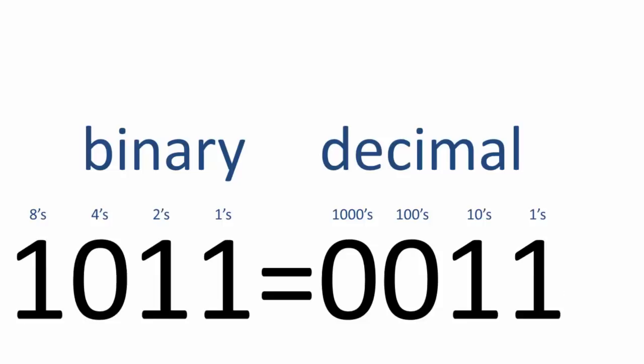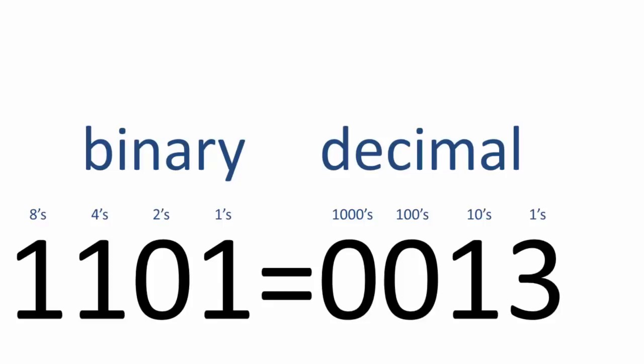Binary is not commonly used by humans, and so there are no special names to help us understand them. For example, 15 is highly recognizable in decimal, but in binary it's simply 1, 1, 1, 1. So to make things a bit easier for humans,